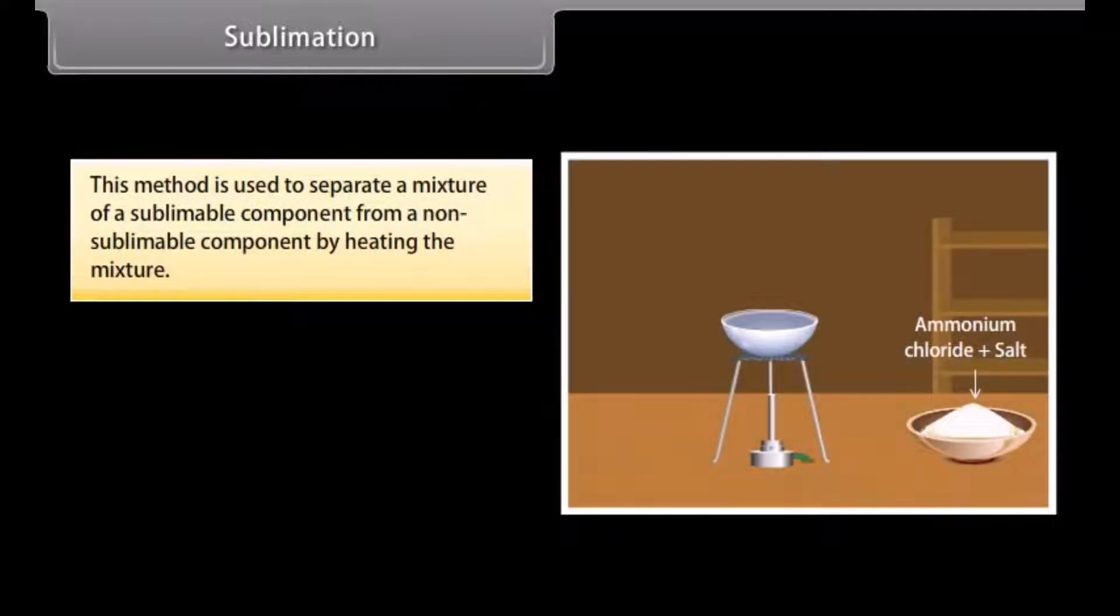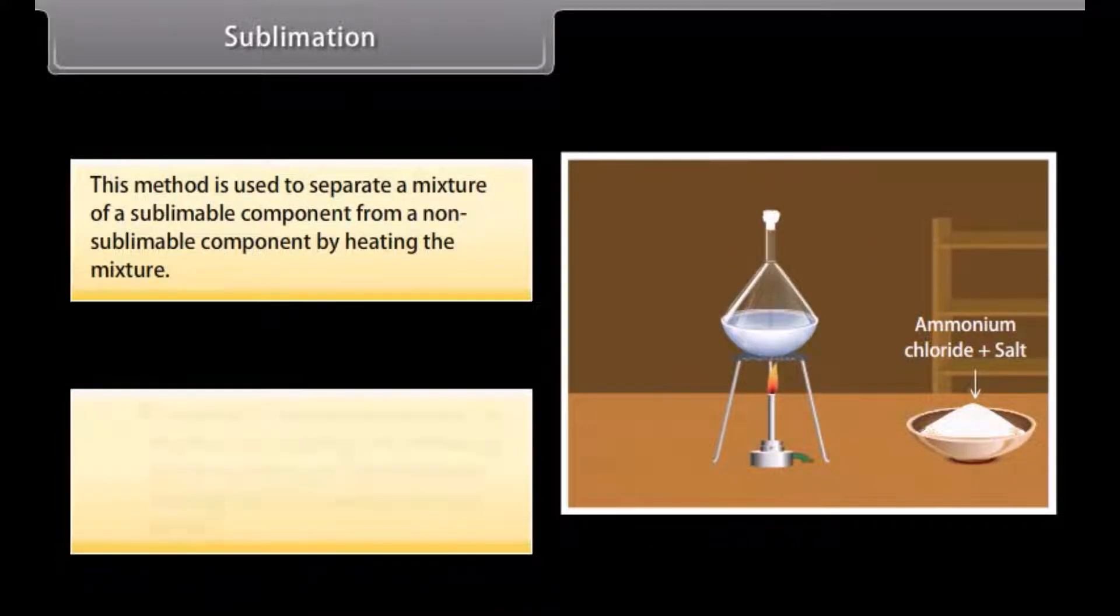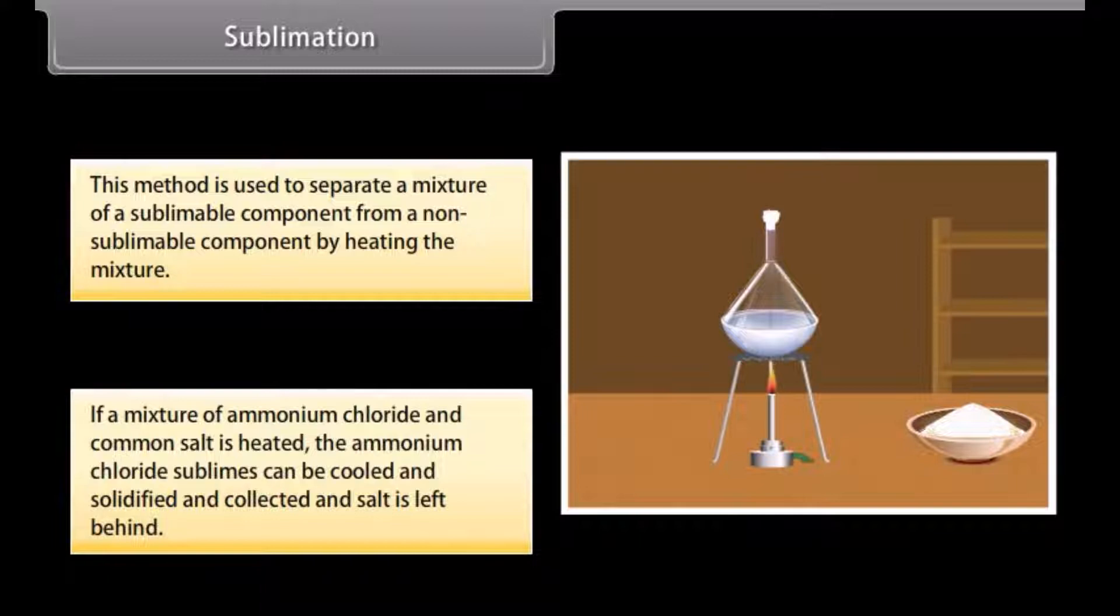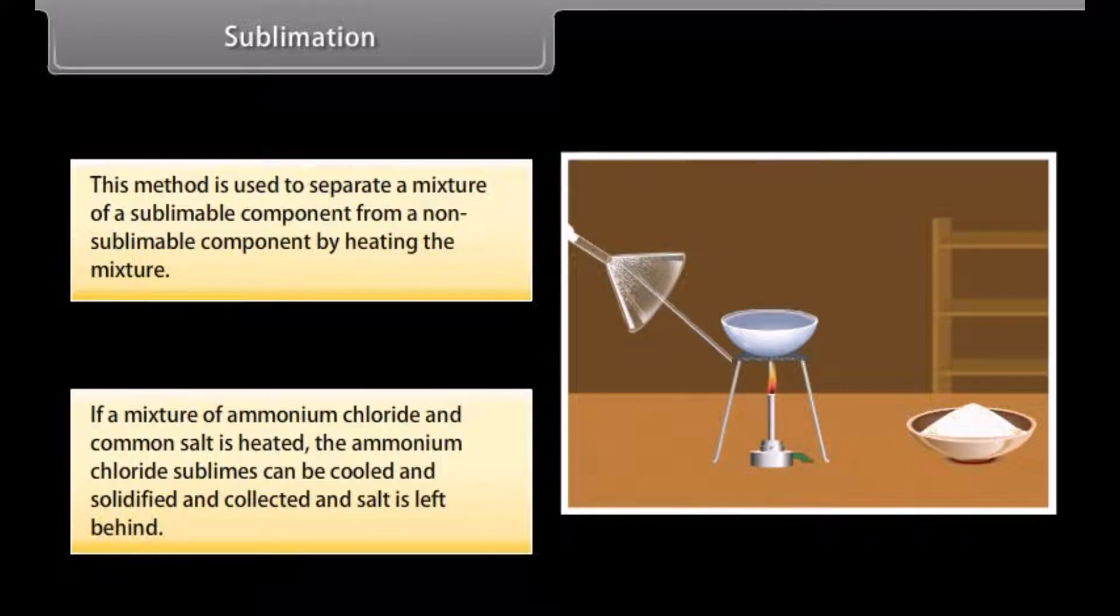Sublimation. This method is used to separate a mixture of sublimable component from a non-sublimable component by heating the mixture. If a mixture of ammonium chloride and common salt is heated, the ammonium chloride sublimes, can be cooled and solidified and collected, and salt is left behind.